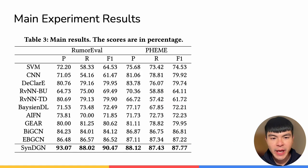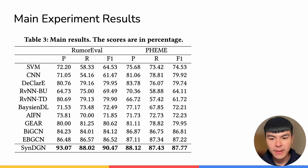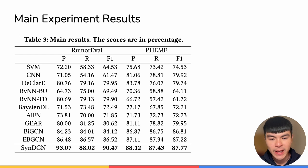As for the experiment results, we first show that SynthDGN outperforms conventional methods like SVM or CNN. We also show that SynthDGN outperforms deep learning-based or graph neural network-based baselines, which is much more challenging, like BiGCN and EBGCN. We can see in the last row that SynthDGN consistently outperforms all previous baselines.